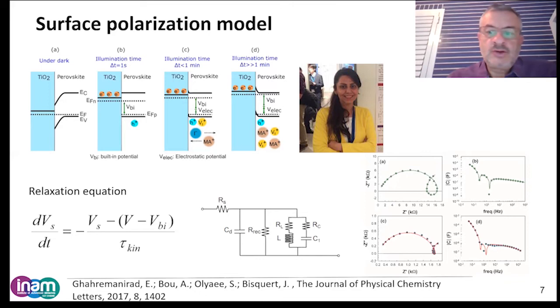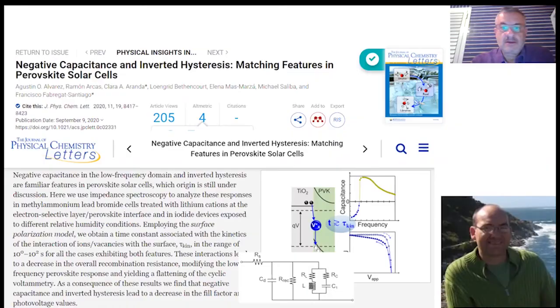To describe the negative capacitance and inductive loops, we are going to use a previously developed surface polarization model in which the ion dynamics is very slow and retards the operation of the voltage with a relaxation equation. This quantitatively provides an equivalent circuit that was shown useful to obtain physical parameters.